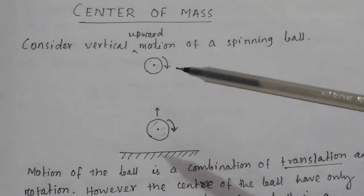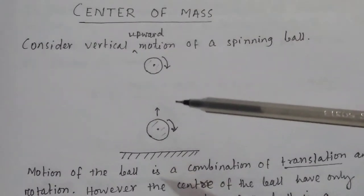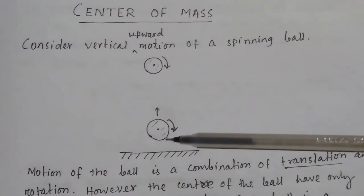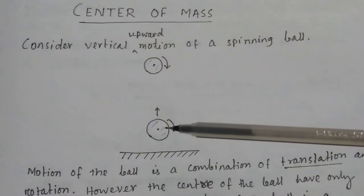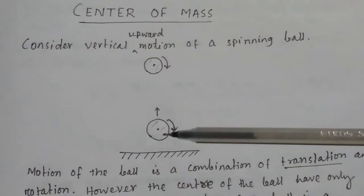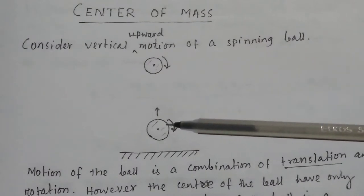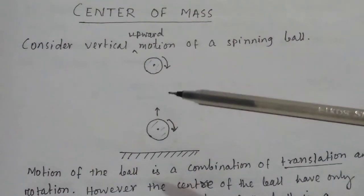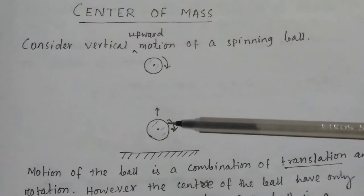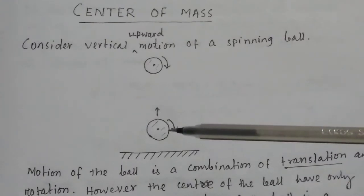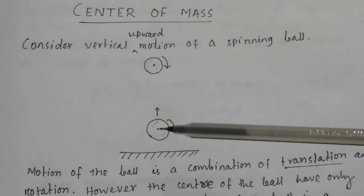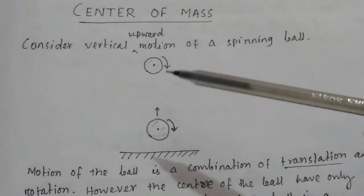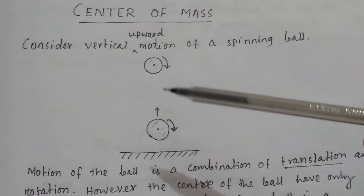Consider the vertical upward motion of a spinning ball. You see this is a spinning ball, moving in the upward direction as well as spinning. The motion of this ball is a combination of translational motion and rotational motion. During spinning it is in rotational motion, and when it is going upward it is in translatory motion.